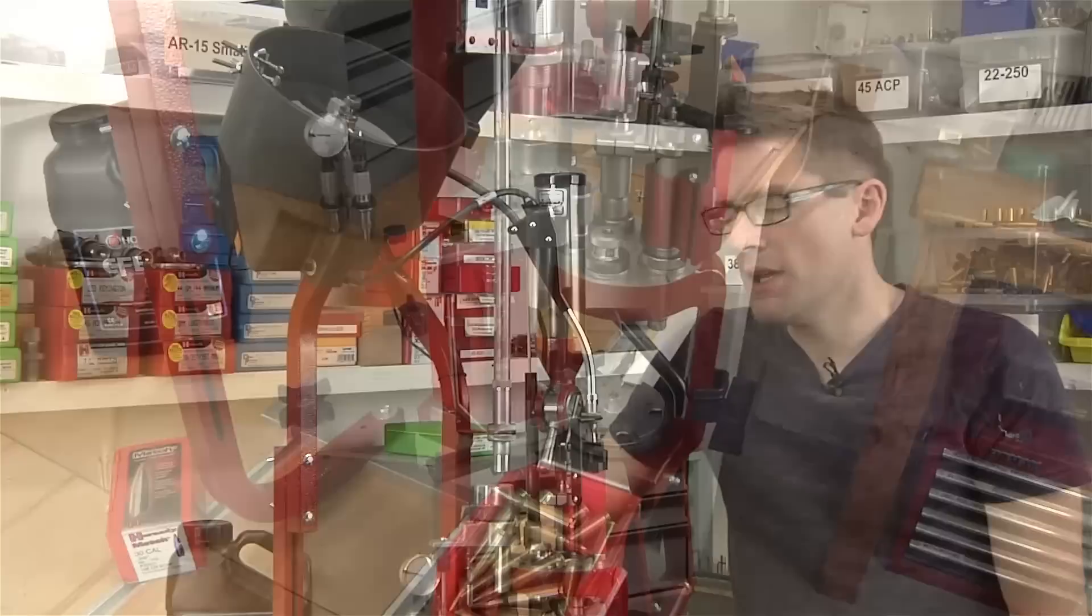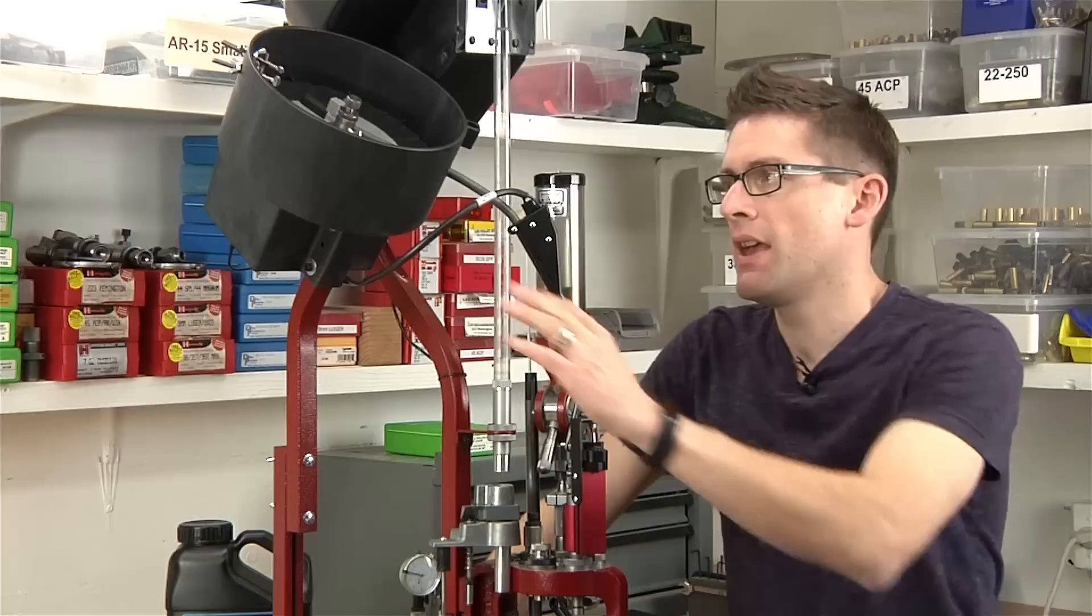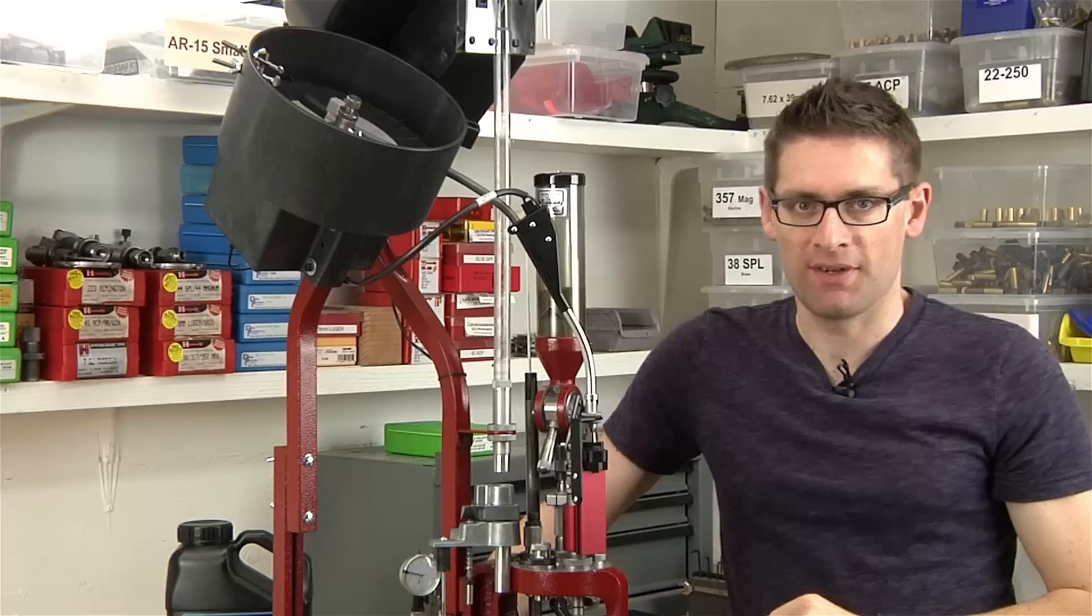So there you have it. Loading .308 Winchester ammunition with the Hornady Lock and Load AP press and the Hornady Lock and Load rifle bullet feed system is simple, fast and easy.